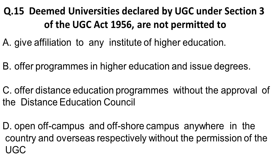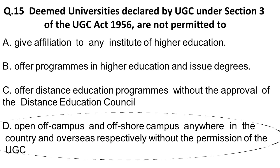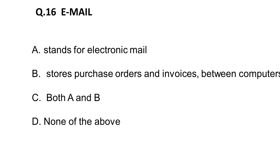Next question: deemed universities declared by UGC under Section 3 of UGC Act 1956 are not permitted to — options are give appellation to any institute of higher education, offer programs in higher education, issue degrees, or offer distance education programs without approval of the Distance Education Council. They can offer distance education but cannot open off-campus and offshore campuses anywhere in the country and overseas without the permission of UGC. The correct answer is D.